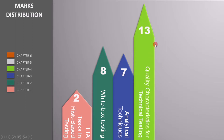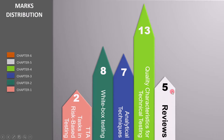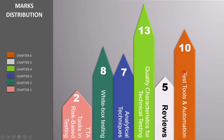Chapter 4 is Test Techniques — this is the most important chapter, and you will get 13 questions. The marks obtained from these chapters will be the deciding factor. Chapter 5 is Reviews, and from this chapter you will be asked five questions. Finally, in Chapter 6, Test Tools and Automation, you will get 10 questions.